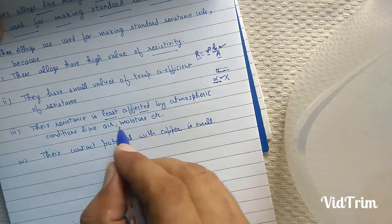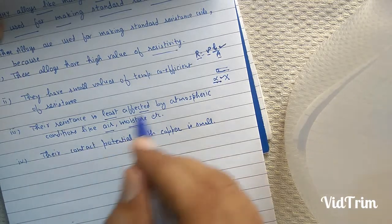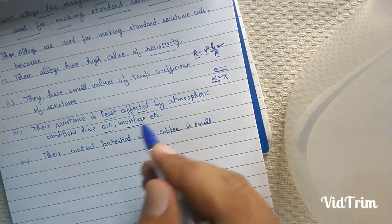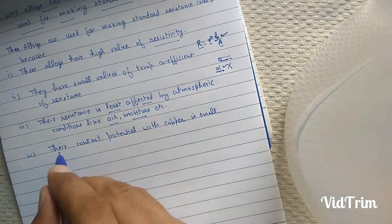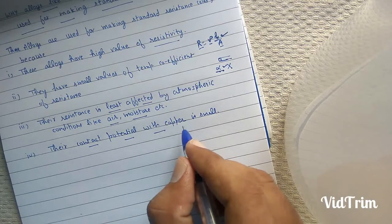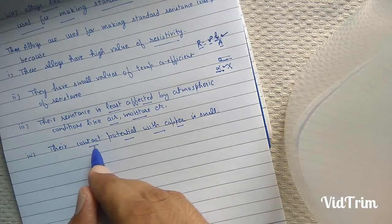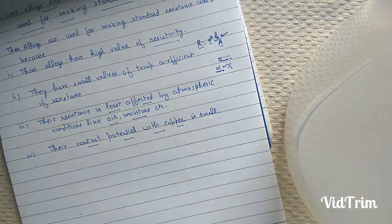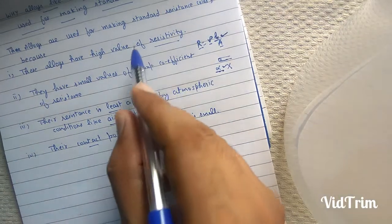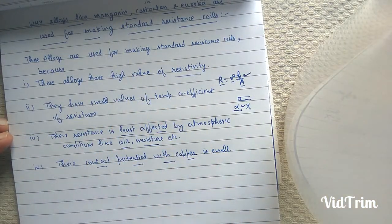Third, the resistance of these alloys is least affected by atmospheric conditions like air or moisture — when moisture or air is present, their resistance is not affected. Fourth, their contact potential with copper is small. Due to all these reasons, we use these alloys for making standard resistance coils.